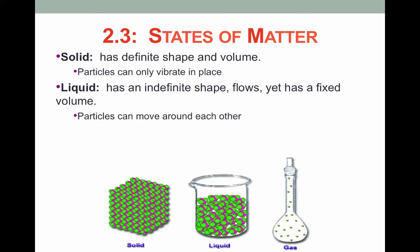Liquids, on the other hand, have an indefinite shape. They flow, yet they have a fixed volume. This is because the particles are able to move around one another, but they're still attracted to each other enough that they won't change their volume, only their shape, when they're put in a different container.